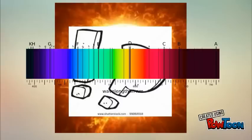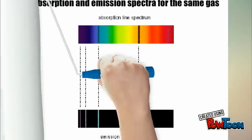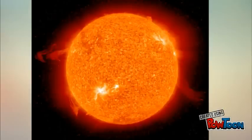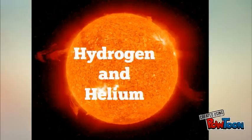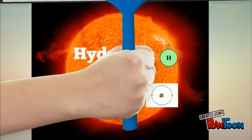Scientists compared the blank wavelengths to the emission spectra of known elements and put the emission spectra and absorption spectra together like a puzzle. After that process, they found out that the Sun is mostly made of hydrogen and helium.